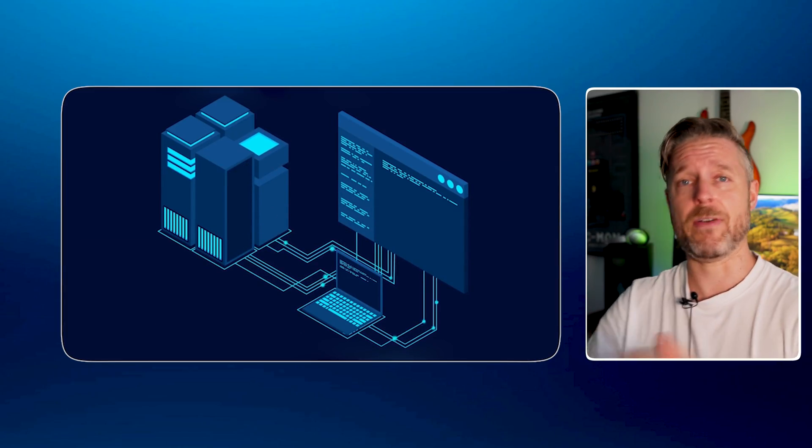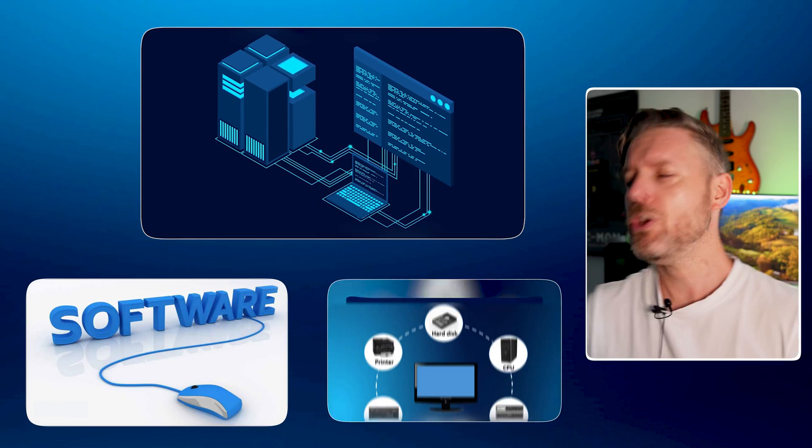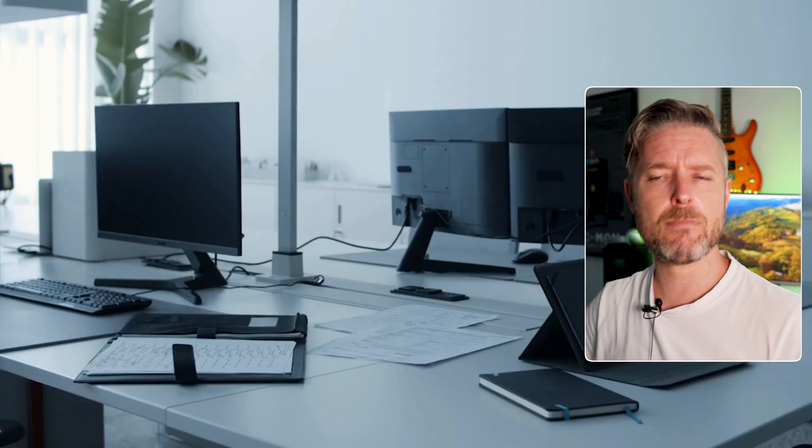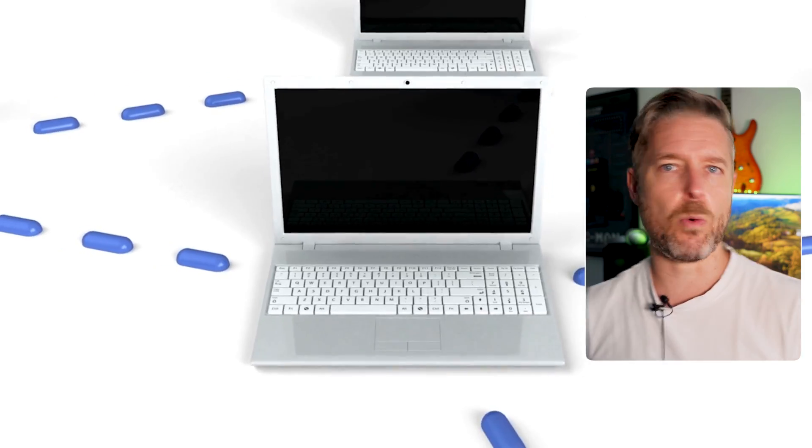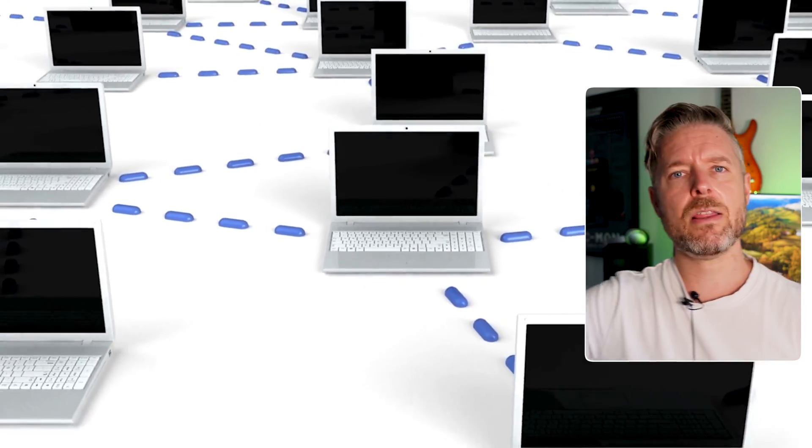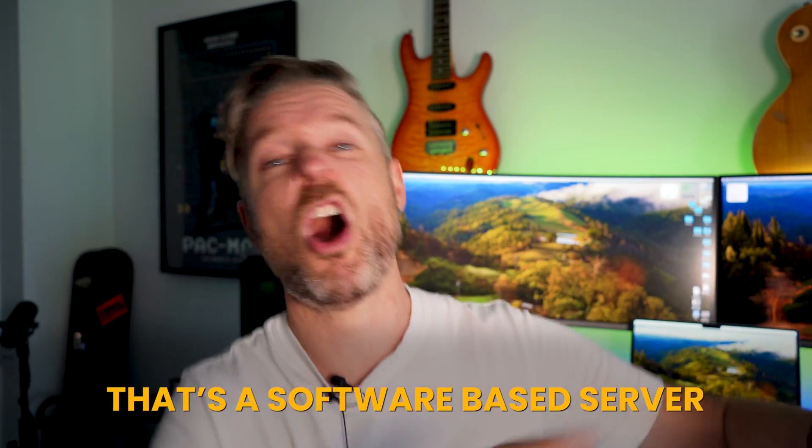You can have software-based servers or hardware-based servers. Essentially, any computer running software that is helping other computers on a network is acting like a server. For example, if all your files sit on one computer and other computers on your network access those files, that computer is acting like a server. You can install any sort of service software on a computer and convert it into a server — that's the basic software-based definition.